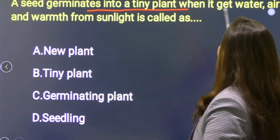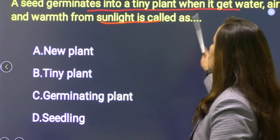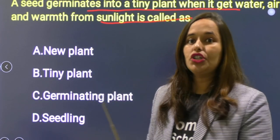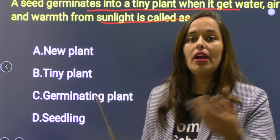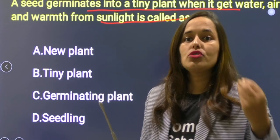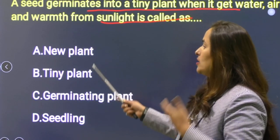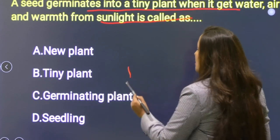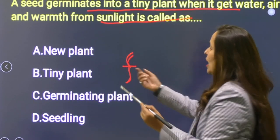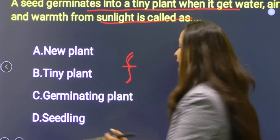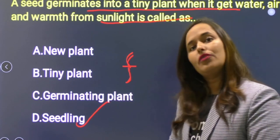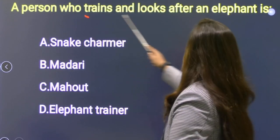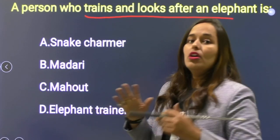Next: A seed germinates into a tiny plant when it gets water, warmth, and sunlight. जो seed germinate होता है favorable condition में — proper sunlight, air, water मिलने पर। Options: new plant, seedling, germinating plant, tiny plant. The new structure formed after germination — with a tiny root or shoot — is known as seedling. Option B is correct.